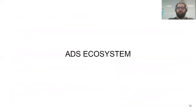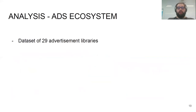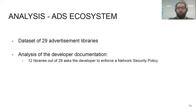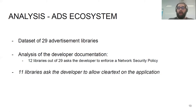This last result hinted that third-party libraries or advertisement frameworks might actually force developers to modify or adopt a network security policy. As the next contribution, we studied the advertisement ecosystem to understand if this scenario is widespread. We created a dataset of the 29 most-used advertisement libraries on Android, read all the developer documentation, and found that 12 of these libraries actually ask the developer to enforce or modify the network security policy. Out of these 12 libraries, 11 ask the developer to allow clear text in their application — which is precisely the first weakness we showed previously.